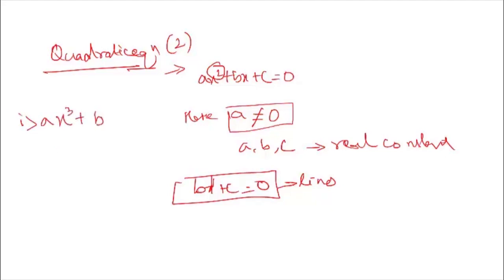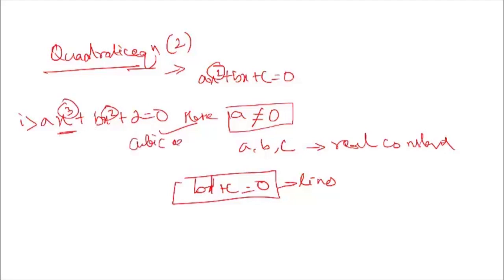Let me show an example: for the equation ax³ + bx² + 2 = 0, by seeing the '2' you should not say it is a quadratic equation. You must look at the highest power in the given equation. Here the highest power is 3, so this is a cubic equation — not a quadratic equation.